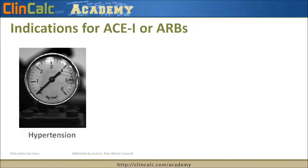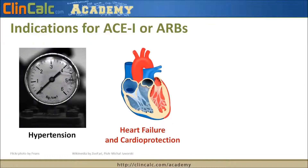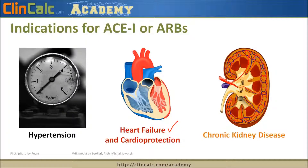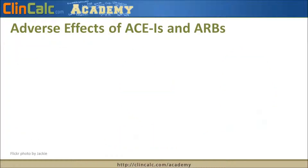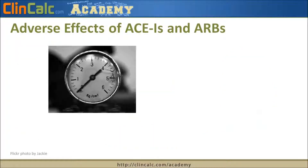What are ACEs and ARBs used for? First is hypertension, or high blood pressure. They're also used for heart failure — ACEs or ARBs are the drug of choice for patients with heart failure. They also provide general cardioprotection, reducing risk of heart attack and stroke in certain populations. Finally, they're great for patients with chronic kidney disease, where too much pressure in the kidney causes damage; ACEs and ARBs can decrease that pressure to reduce damage.